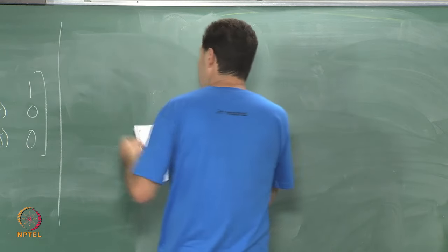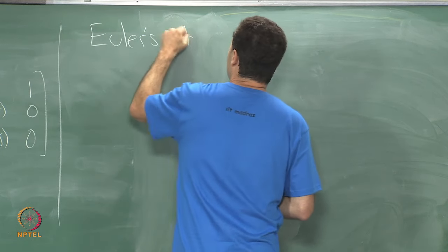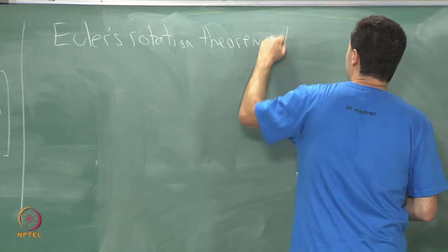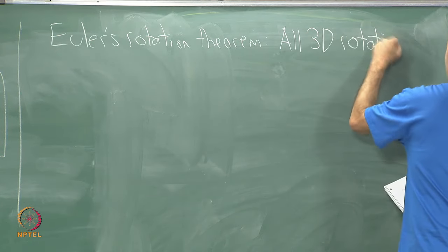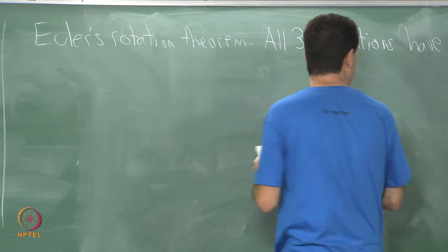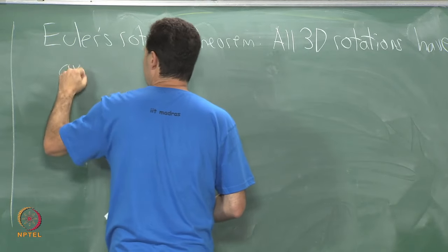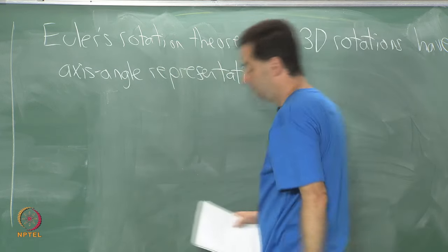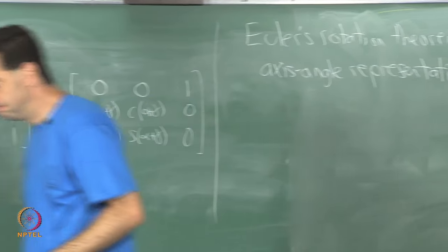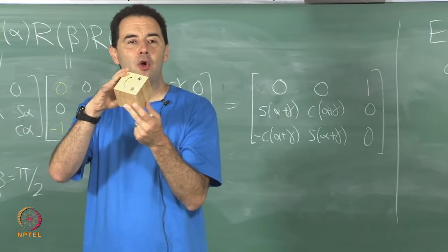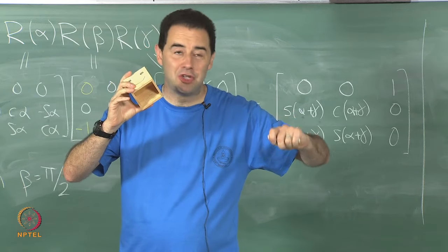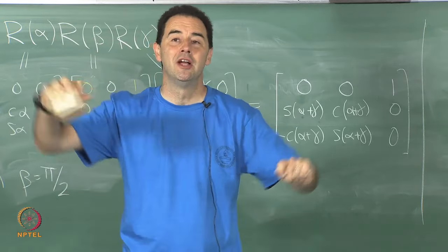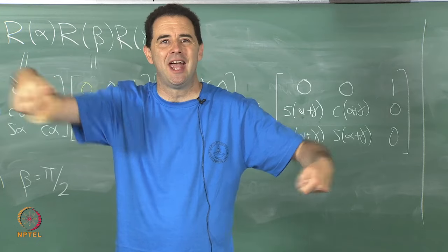It ends up being the way to do things. One first step to that is Euler's rotation theorem, which is that all 3D rotations have what is called an axis-angle representation. If I consider the orientation of a rigid body in space, no matter what orientation it ends up in, I can describe that as a single rotation about some axis through the origin. That axis might not be aligned with any of the coordinate axes — just some arbitrary axis through the origin — and I give it a twist by some amount theta, and that describes the orientation of the body.